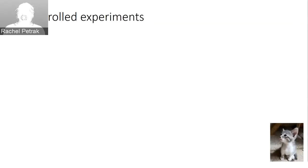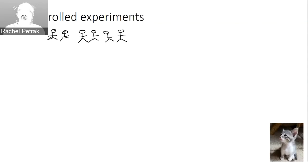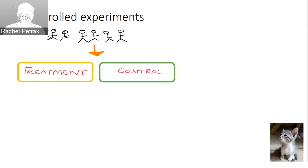Let's start with controlled experiments. This is a basic sort of research design. In a controlled experiment, you have a number of participants, and the key aspect is that they are assigned by the investigator to either the treatment group or the control group. In a more complex experiment, you might see multiple treatment groups compared, but for our purposes today, we'll just think about one treatment group and one control group.